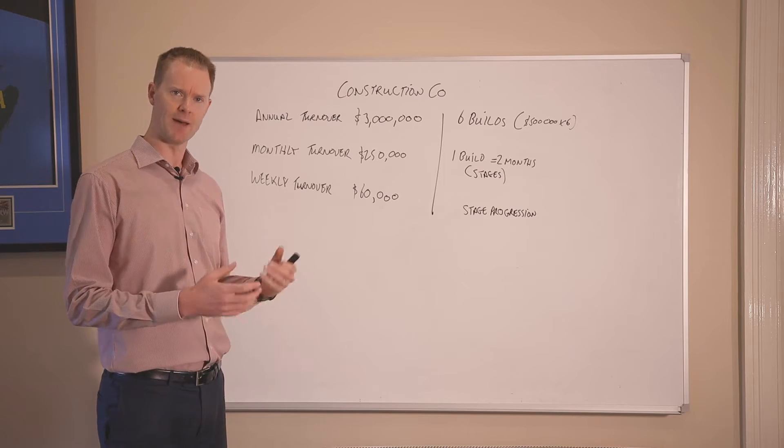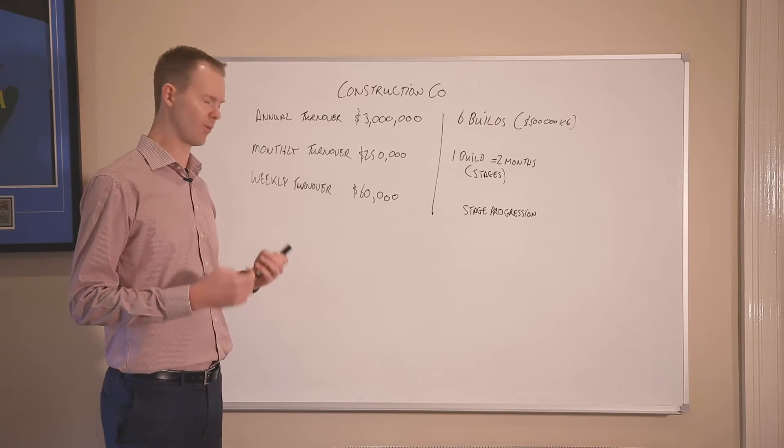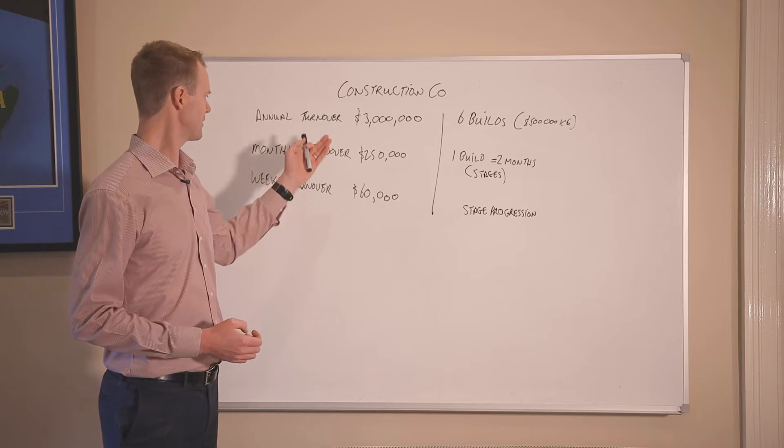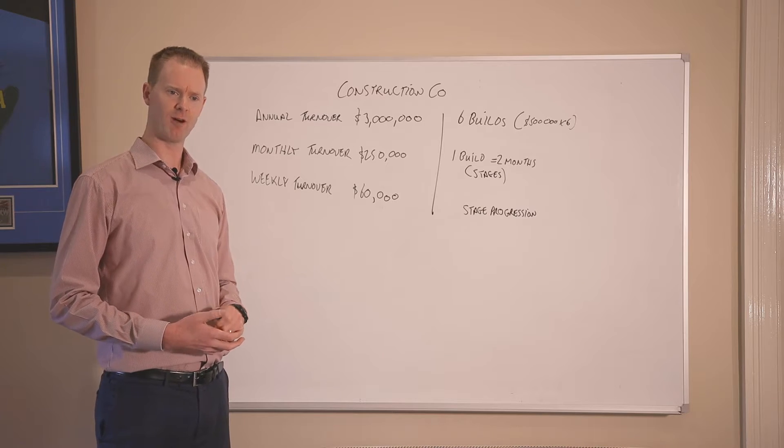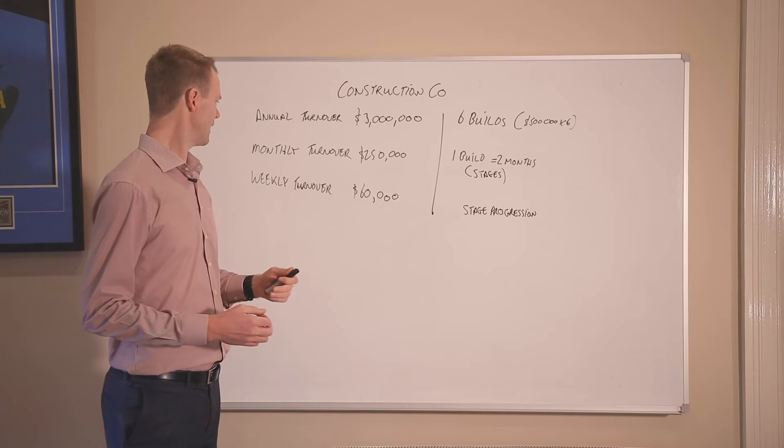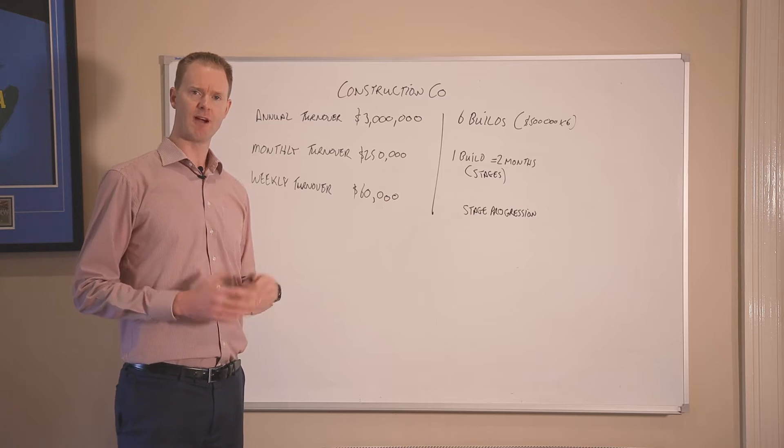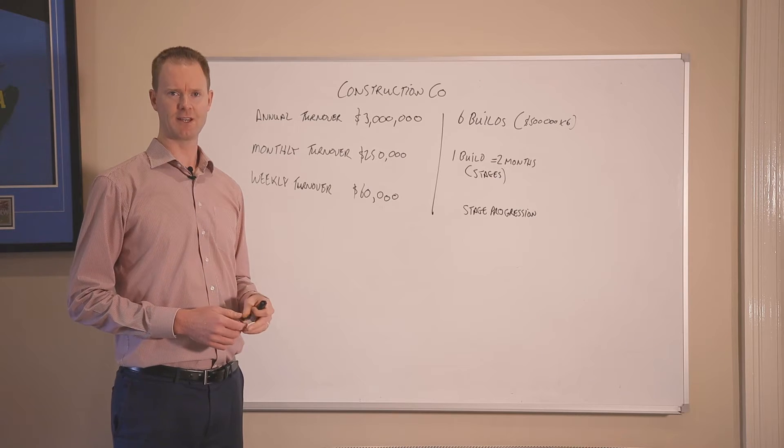If we break that back down to a monthly turnover and a weekly turnover, that means there's basically $250,000 per month coming in from the build stages. And weekly turnover over 50 weeks, we'd be looking at $60,000 per week.